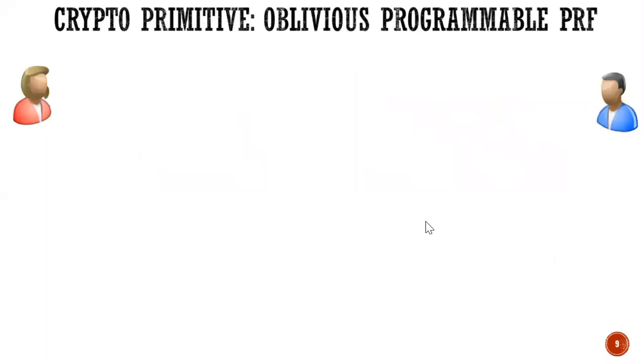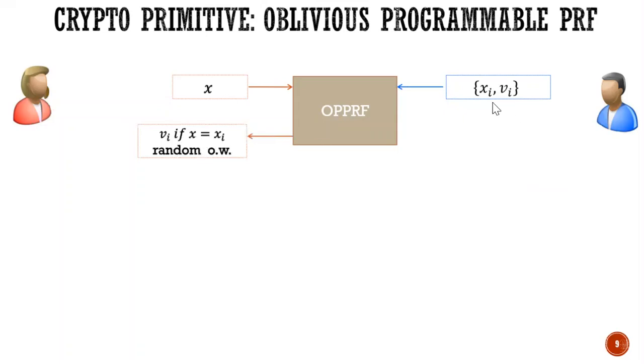Before I go into our constructions, I wanted to review a crypto primitive, which is Oblivious Programmable PRF. In OPPRF, both have a set of XI and VI. And Alice queries on X and obtains VI if X is equal to XI and random otherwise. So the security requirement here is that Bob doesn't learn anything about X. And Alice learns nothing about XI and other VI.